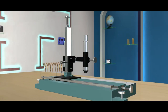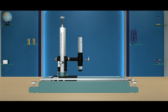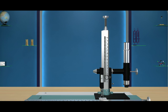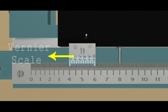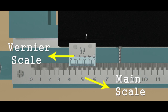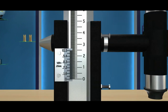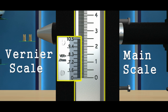A travelling microscope is a compound microscope fitted vertically on a vertical scale. The base of the travelling microscope consists of levelling screws which help in adjusting the base horizontally. It can move up and down and left and right, carrying a vernier scale along with it. Here you can see the horizontal main scale and vernier scale. Similarly, you can see the vertical main scale and vernier scale. At any given position, the readings are taken by combining the main scale and vernier scale readings.